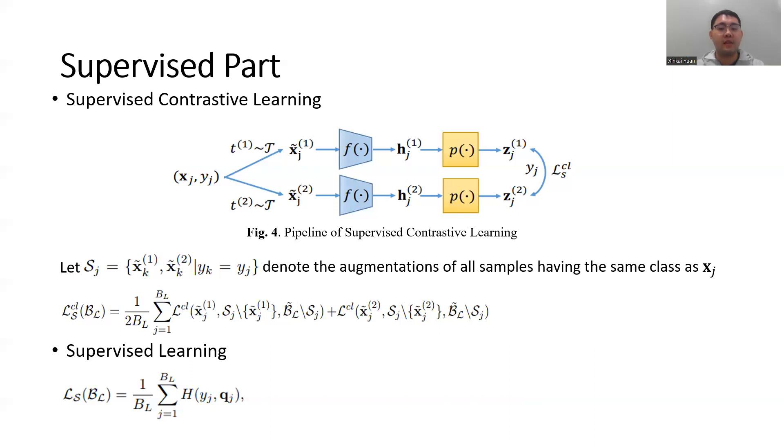For the second augmentation of xj, similarly, anything in Sj except itself will be considered as its positive samples, and others are negative samples, which leads to the second term in the loss function.